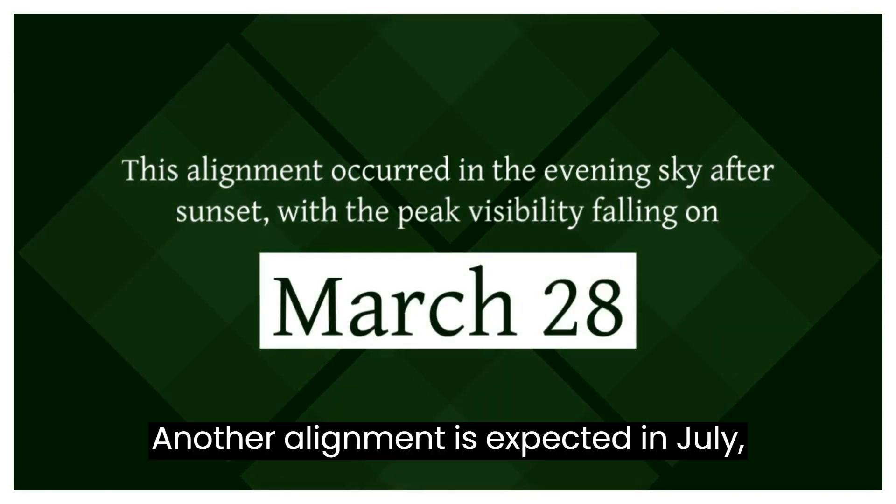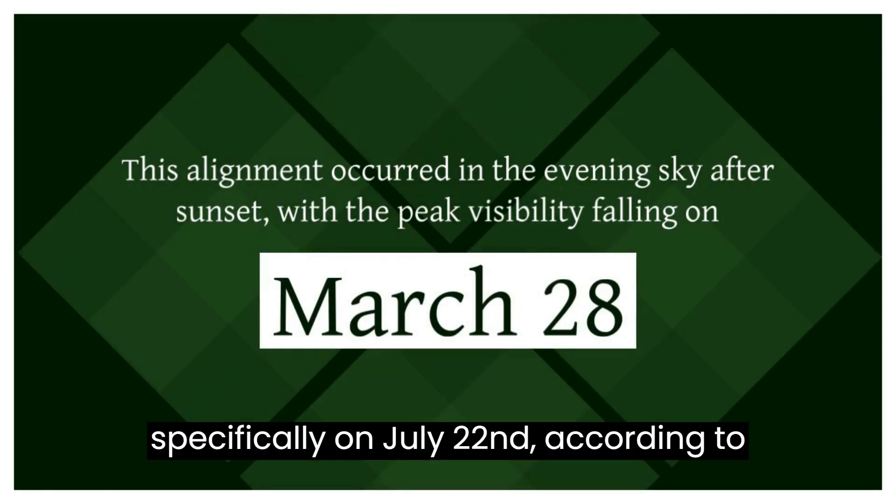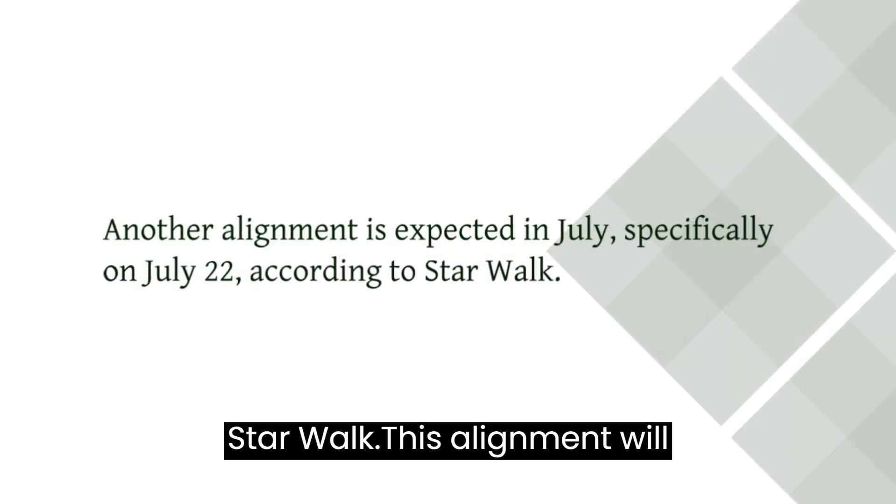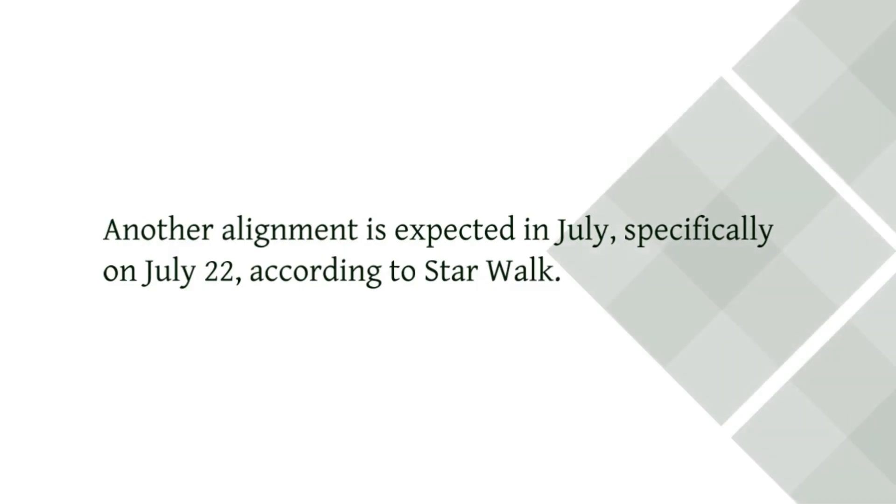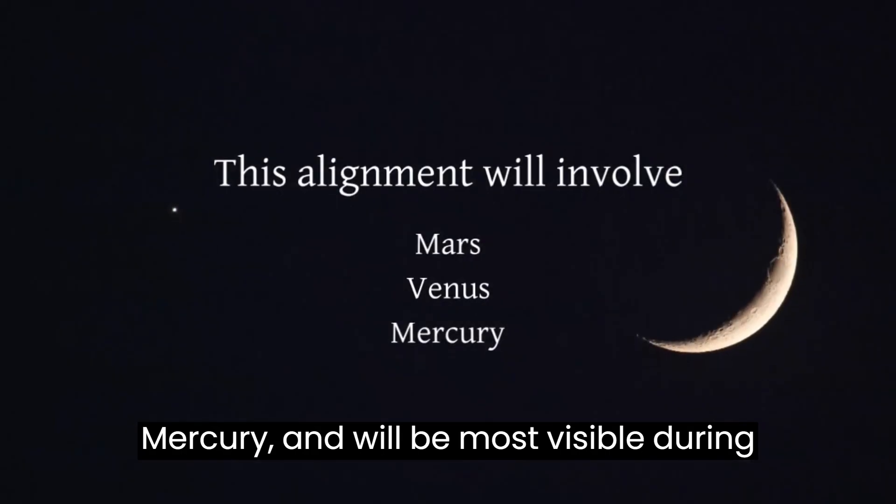Another alignment is expected in July, specifically on July 22, according to StarWalk. This alignment will involve three planets - Mars, Venus, and Mercury - and will be most visible during the evening.